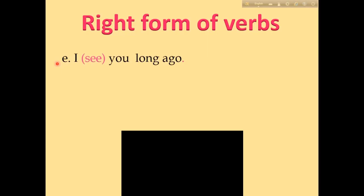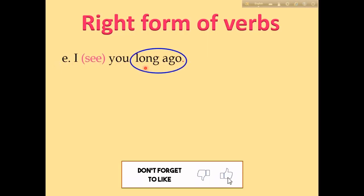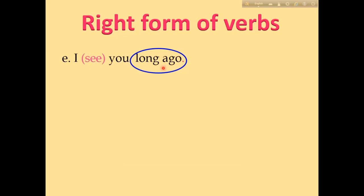Number E: 'I see you long ago.' 'Long ago' is the key term here. This term is used in past indefinite tense. The past form of the verb is used in past indefinite tense. 'See' is the verb here, so the correct form is 'saw.' 'See' is the present form and 'saw' is the past form.